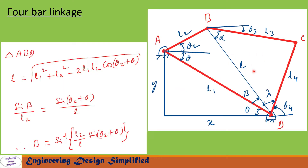To find length l, let us apply the cosine rule for triangle ABD. The angle at A is theta plus theta2, so the cosine rule gives: l equals the square root of l1 squared plus l2 squared minus 2·l1·l2·cos(theta2 + theta). Using this formula we can find length l for any given angle theta2.